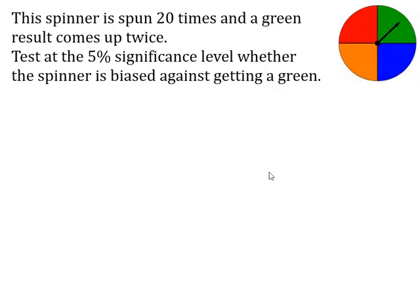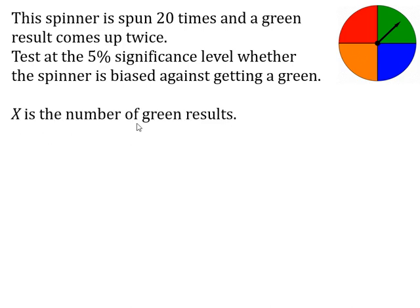We're going to look at an example we've already met. We've got a four-coloured spinner that was spun 20 times. Green only came up twice, so we might want to test whether the spinner is biased against getting a green. We're given the 5% significance level. The first thing we always have to do is decide what our random variable is — in this case, it's the number of greens, so x is the number of green results.